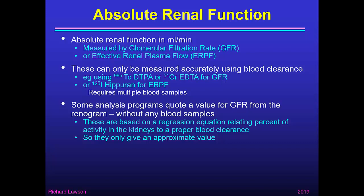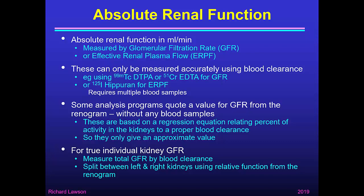All of these techniques are based on a regression equation that relates the percent of activity in the kidneys to a proper blood clearance determined on a group of patients, so they only give an approximate value. If you want a true individual kidney GFR — the clearance in ml per minute for left and right kidneys separately — you need to do two things: measure the total GFR by blood clearance and then split it between the kidneys using relative function from the renogram. You can't get an accurate value from the renogram on its own.